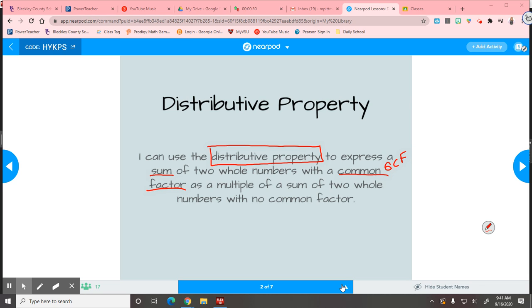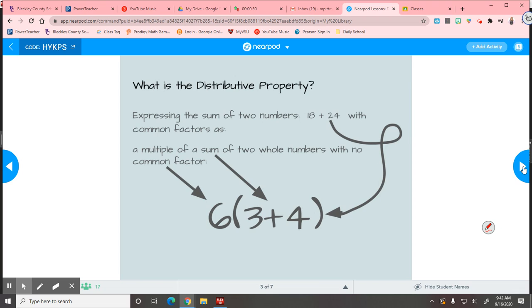So that's what we're going to do today. We're going to take the GCF, we're going to use the slide, find the GCF, and we're going to put it into the distributive property. Questions so far? We're good? So the question is, what is the distributive property? We kind of already went over that, and that's on your paper as well. Basically, it's taking the sum of two numbers, like 18 and 24, and breaking them down using the slide to write them as a sum with no common factors. That's what we're doing here.